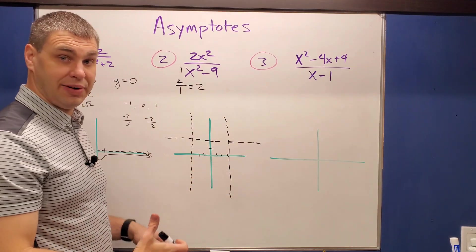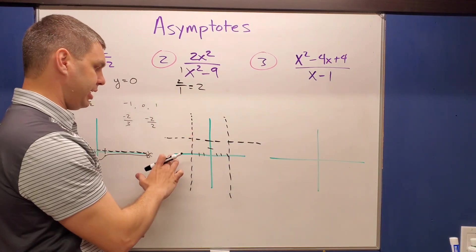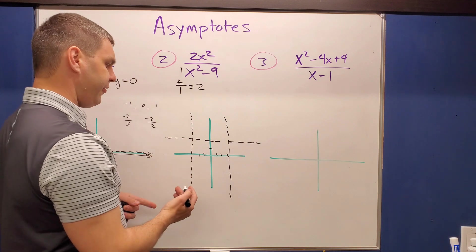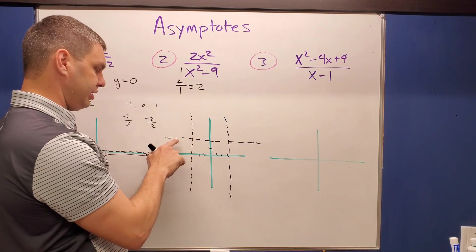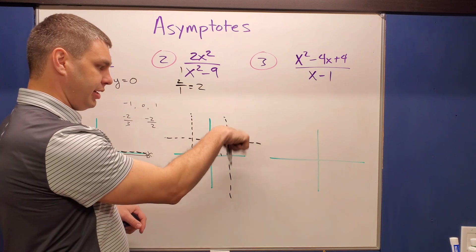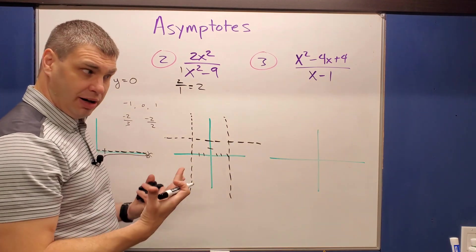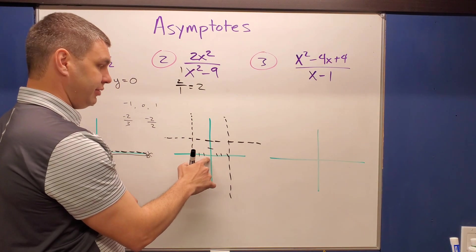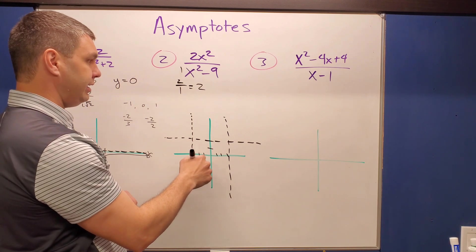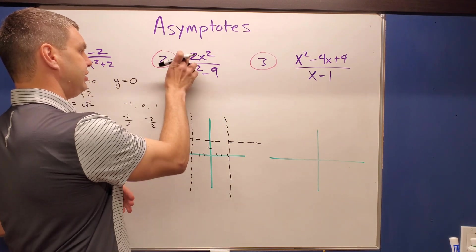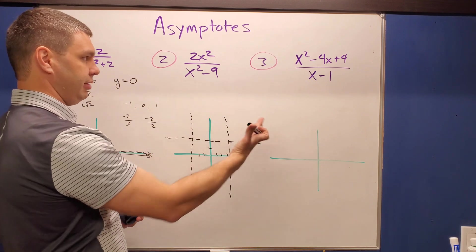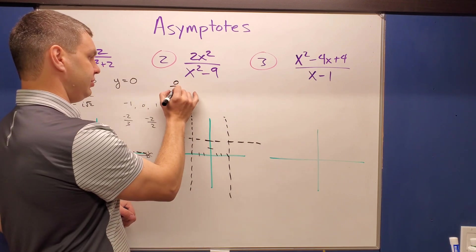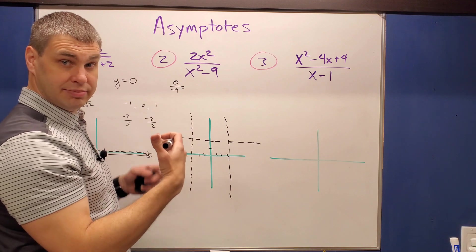With the horizontal asymptote y equals two added, the graph is divided into six regions. We use test points to determine whether the curve is above or below the asymptote in each region. The easiest test point is x equals zero: the numerator gives zero, and the denominator gives zero minus nine equals negative nine. Zero divided by anything is zero, so the output is zero.